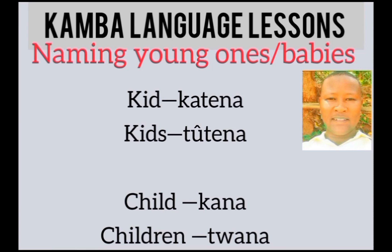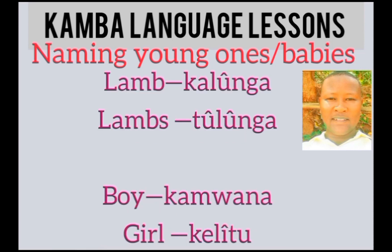Next we move to lamb — boy and the girl. Lamb is kalunga. Lambs is tulunga. Boy is kamwana, girl is kelitu.